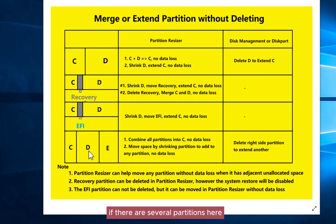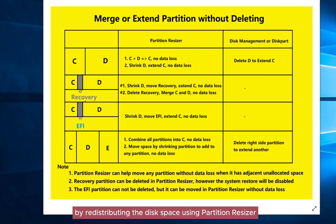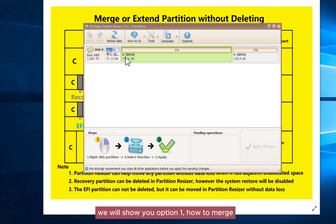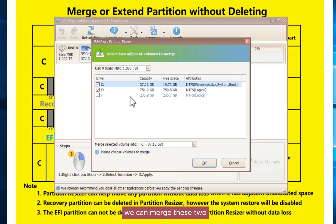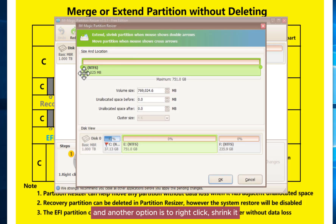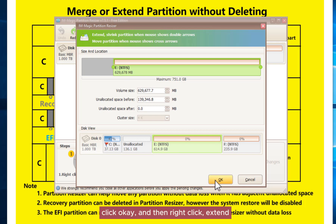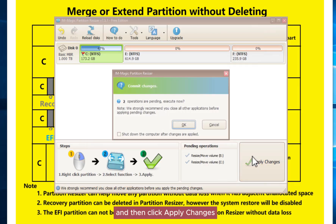If there are several partitions, here are two options. Option one is to combine any two into one without data loss. Option two is to move space from one partition to another by redistributing disk space using Partition Resizer. For option one, merge two partitions, click OK, then click apply changes. For option two, right-click and shrink one partition, click OK, then right-click another and extend it, click OK, and click apply changes.